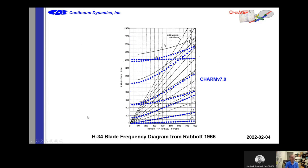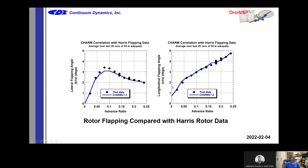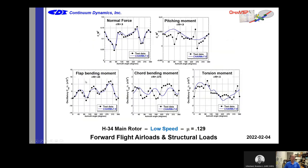CHARM has a finite element analysis — so if you put in the cross-sectional properties of your blade, you can calculate mode shapes, natural frequencies, blade flapping (lateral and longitudinal), and most importantly, blade loads. This is an H-34 main rotor loads correlation as a function of azimuth: normal force, pitching moment, flap bending moment, chord bending moment, and torsion moment. CHARM does a good job of this. The chord bending moment is harder to capture accurately, but it matters less than the flap bending and torsion moment.